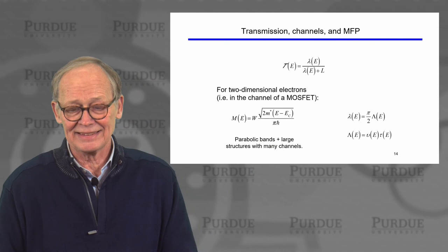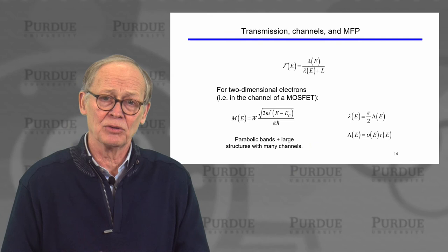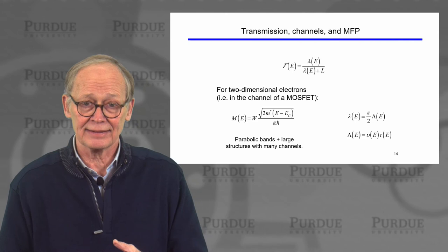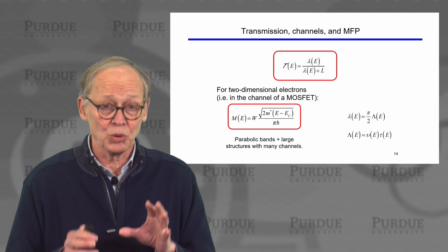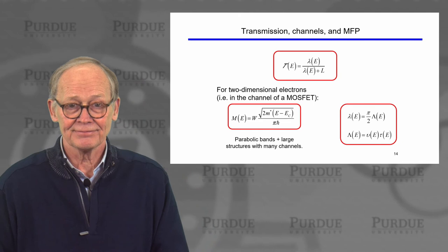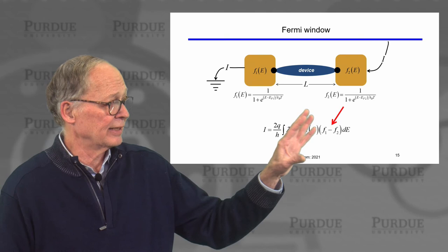The mean free path — recall there's a numerical factor that multiplies the average distance between scattering events. In two dimensions, when you take out the averaging over angle, the mean free path for backscattering is π/2 times velocity times scattering time. So we have simple expressions for transmission, number of channels, and the mean free path that we will use to work out transport in our MOSFETs.